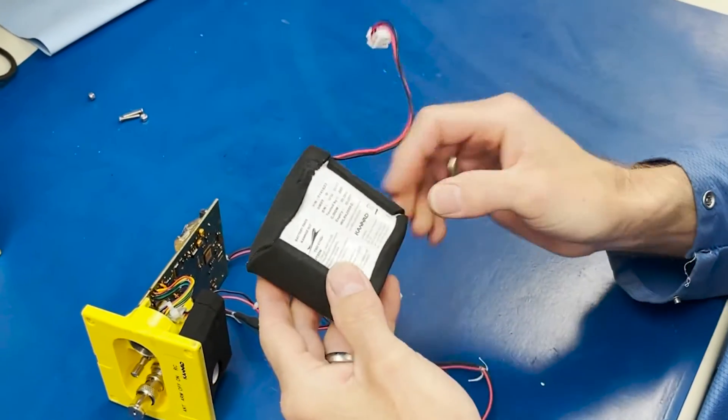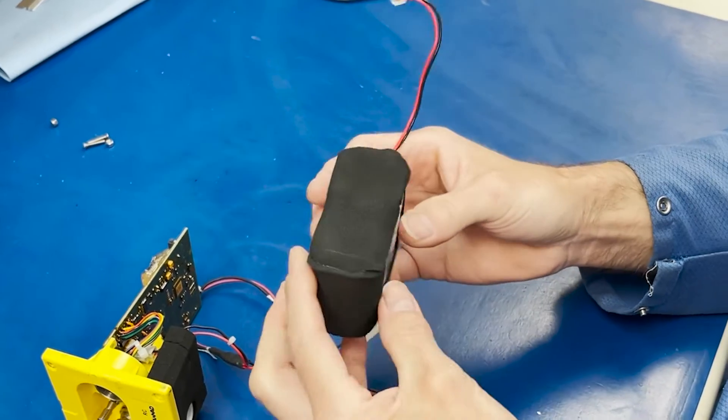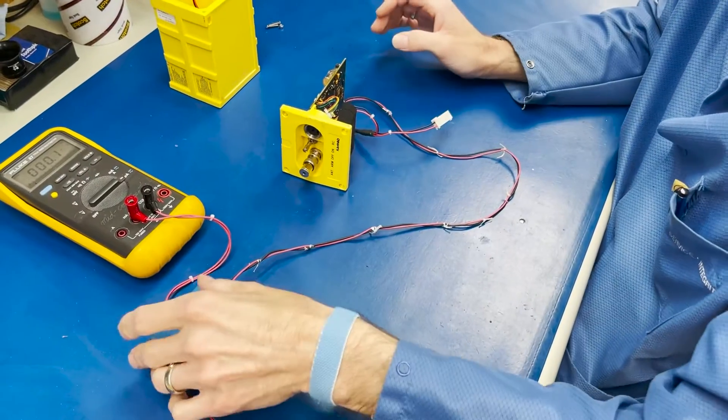So when they come in and we replace the battery, we not only replace the battery, we also go through and replace all the seals. We replace the incandescent.